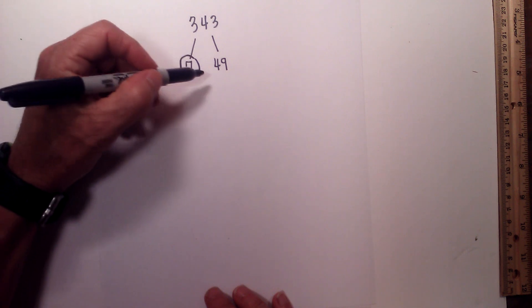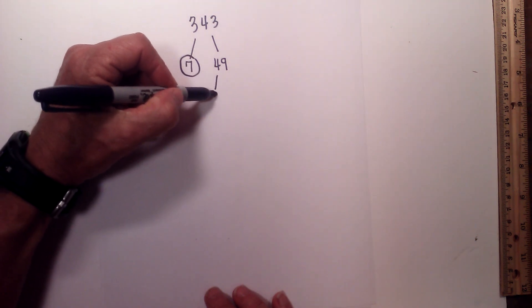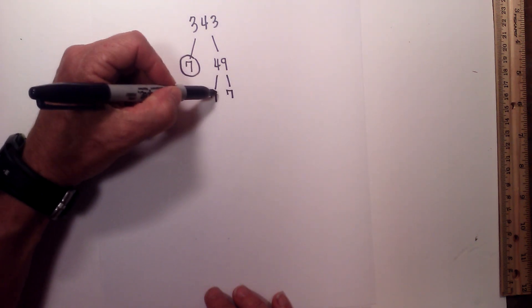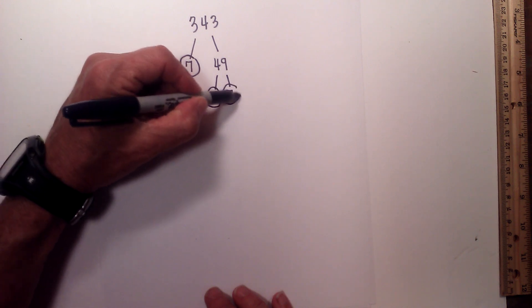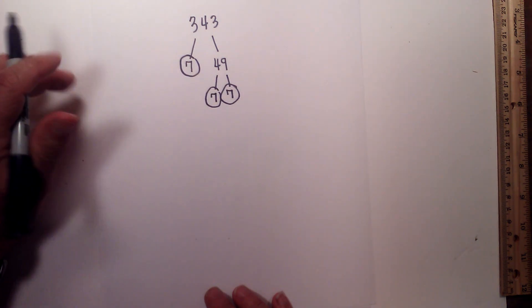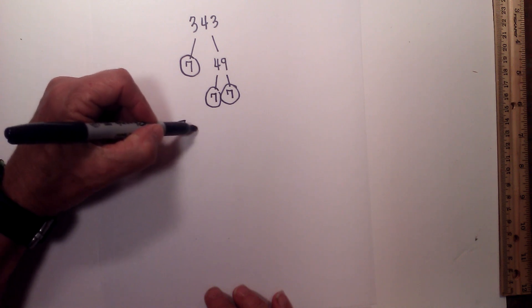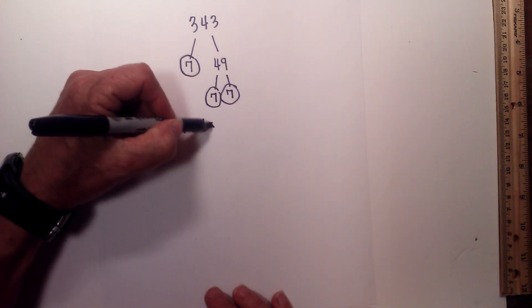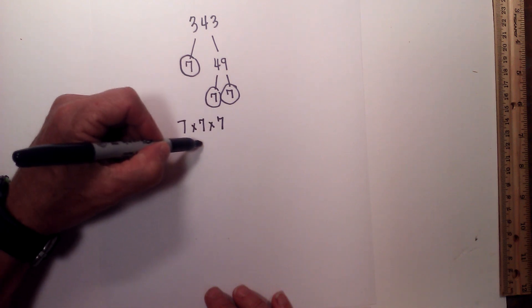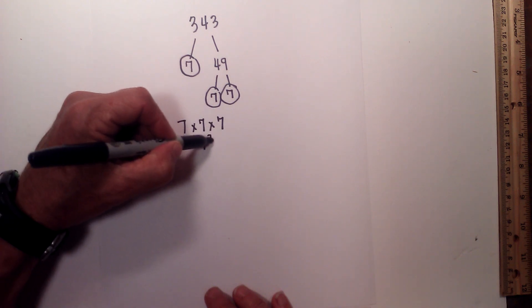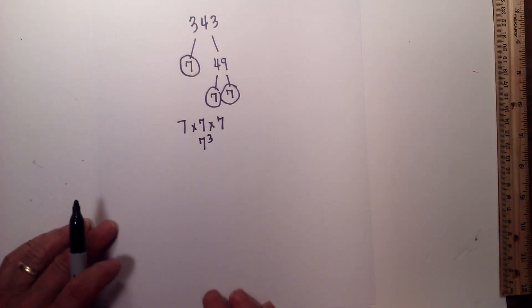Now 7 times 7 equals 49. I will circle both of the sevens because they are prime. So the prime factorization of 343 is 7 times 7 times 7, or 7 cubed.